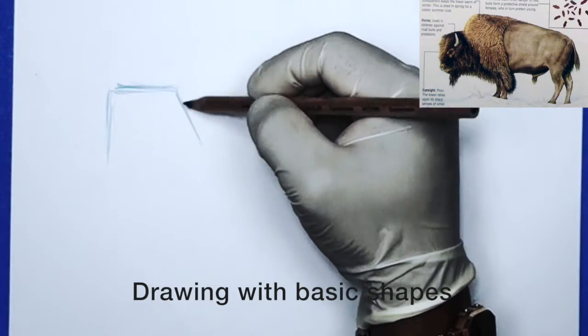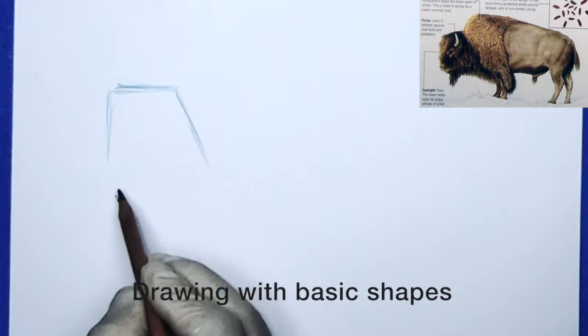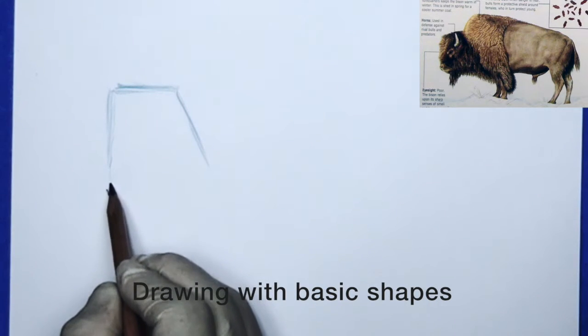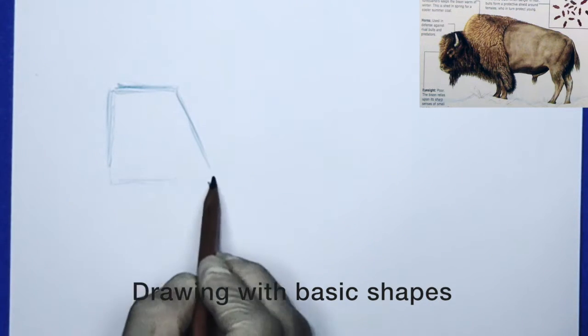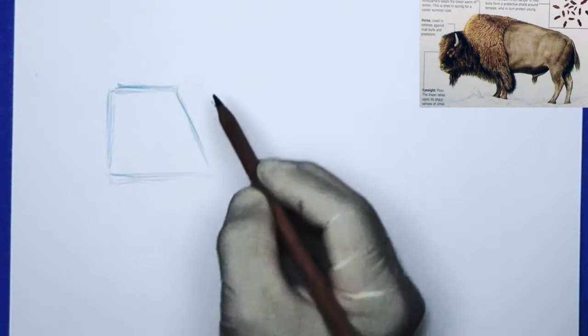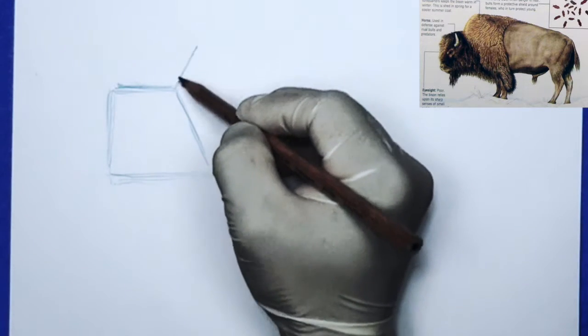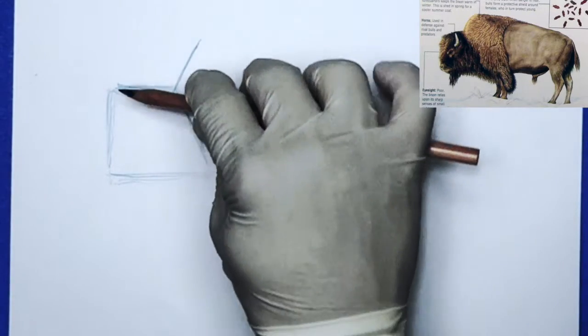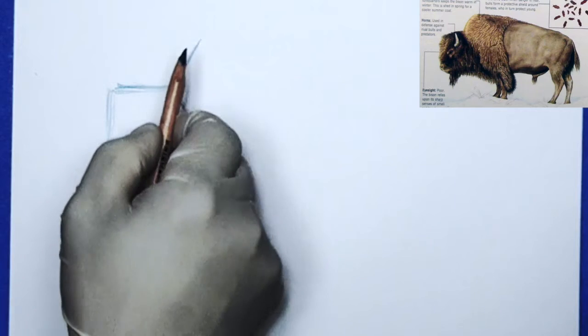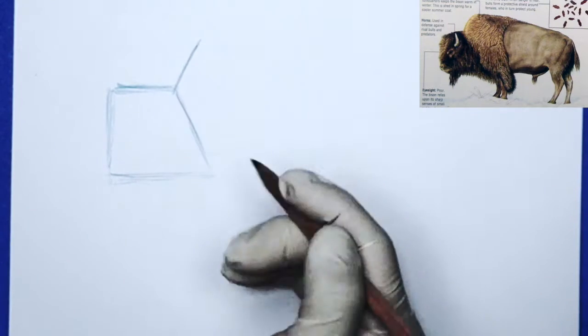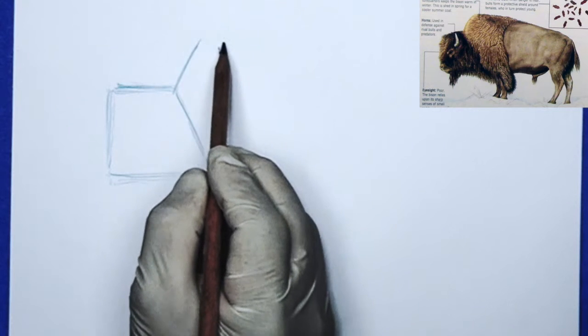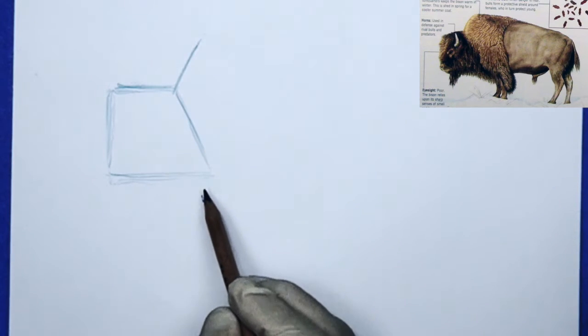As before in previous lessons, I recommend that you look at the subject as different shapes. Try not to draw the whole subject as one picture. I've chosen the head and drew a trapezoid, and I'm going to be using the head to proportion the rest of the body of our American Bison.